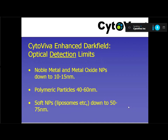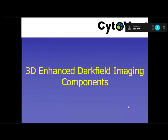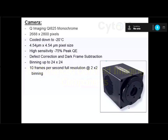In practical terms: for noble metals and metal oxide nanoparticles, you can detect scatter of light off particles down to about 10 to 15 nanometers. For polymeric particles, it goes down to between 40 and 60 nanometers. And for soft particles like liposomes and lipid particles, down to about 50 to 75 nanometers.